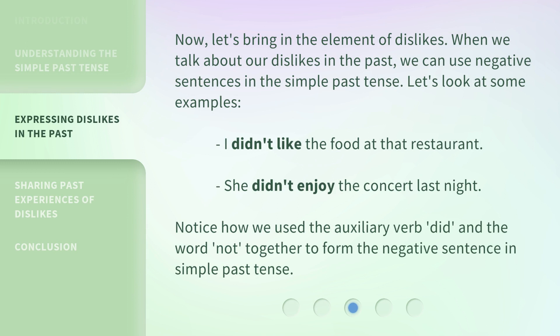Now, let's bring in the element of dislikes. When we talk about our dislikes in the past, we can use negative sentences in the simple past tense. Examples: I didn't like the food at that restaurant. She didn't enjoy the concert last night.